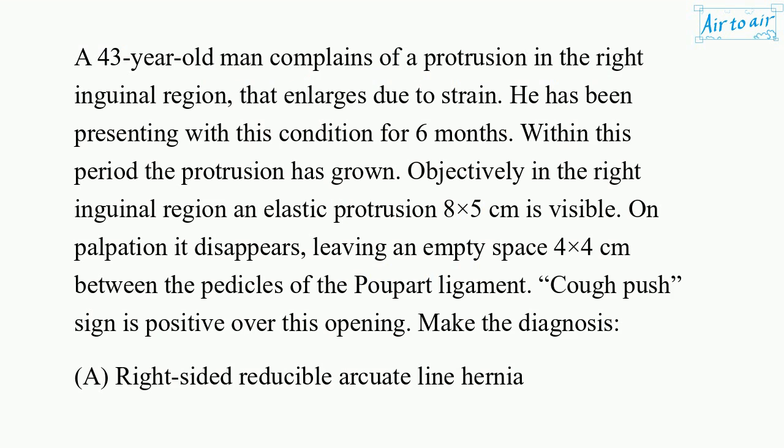A 43-year-old man complains of a protrusion in the right inguinal region that enlarges due to strain. He has been presenting with this condition for six months, within which the protrusion has grown. Objectively, in the right inguinal region an elastic protrusion 8x5 cm is visible. On palpation it disappears, leaving an empty space 4x4 cm between the pedicles of the Poupart ligament. Cough push sign is positive over this opening. Make the diagnosis.